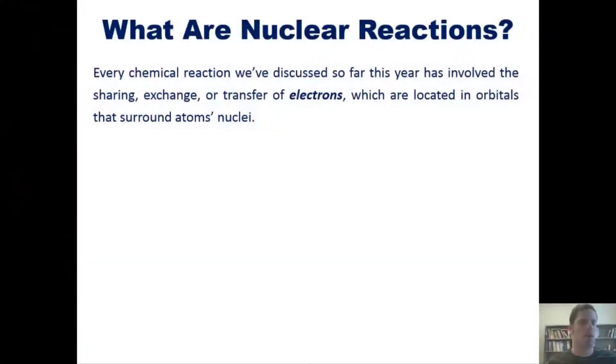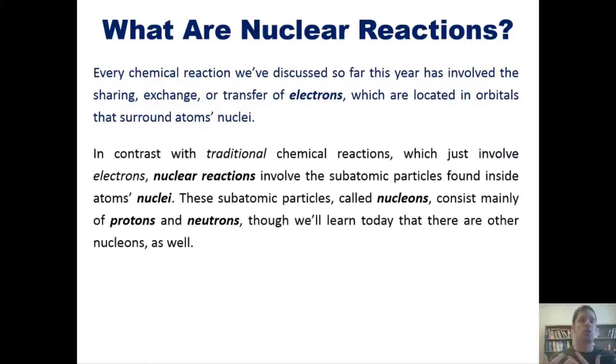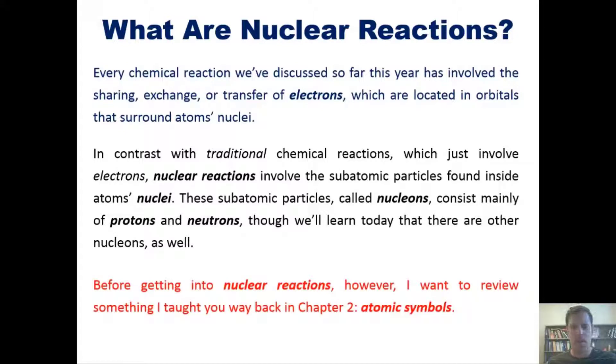Every chemical reaction we've discussed so far has involved the sharing, exchange, or transfer of electrons located in the orbitals that surround the atom's nuclei. In contrast with these traditional chemical reactions which just involve electrons, nuclear reactions involve the subatomic particles found inside the atom's nuclei. These subatomic particles called nucleons consist mainly of protons and neutrons, though we'll learn there are actually other nucleons as well.